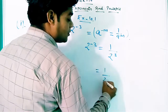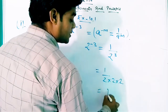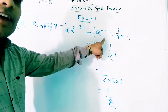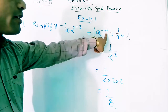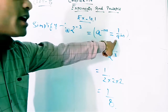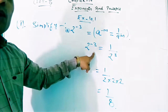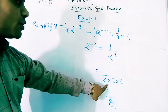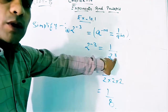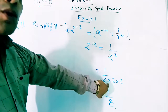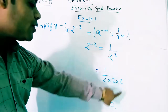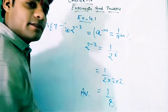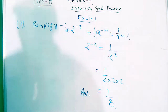2 raised to the power 3 means 2 multiplied 3 times: 2 into 2 into 2, which equals 8. So we used the rule that a raised to the power minus m equals 1 upon a^m. Therefore 2^(-3) becomes 1 upon 2^3, which is 1 upon 8. Your answer is 1 upon 8.